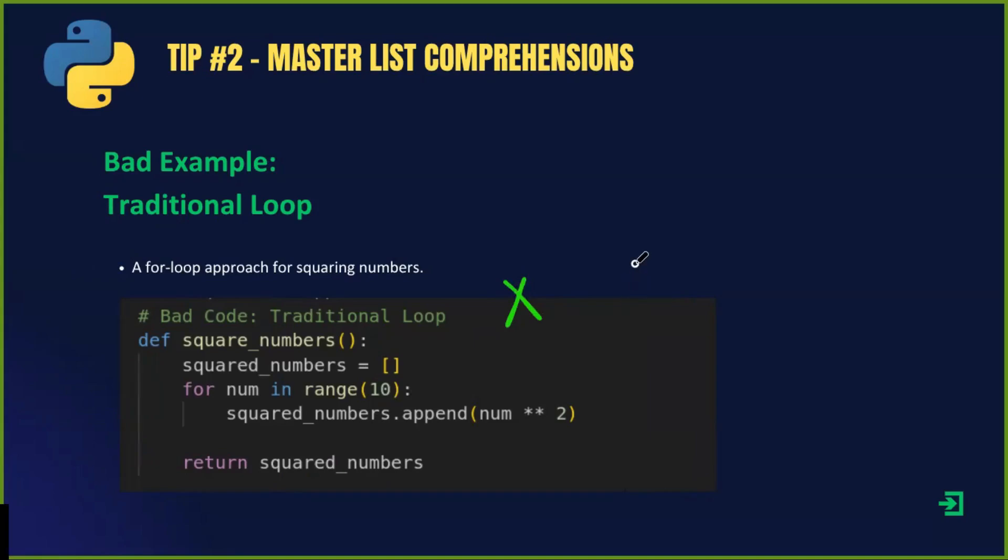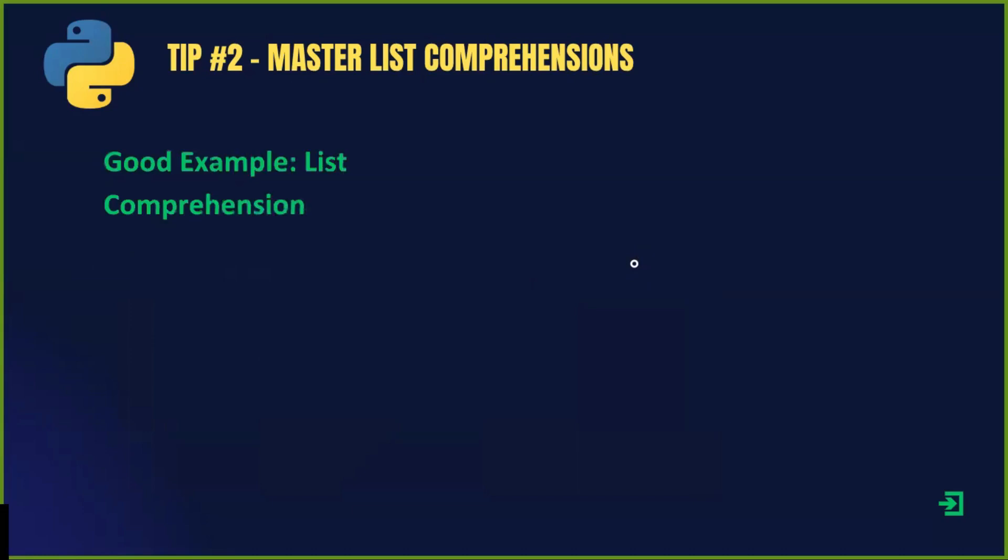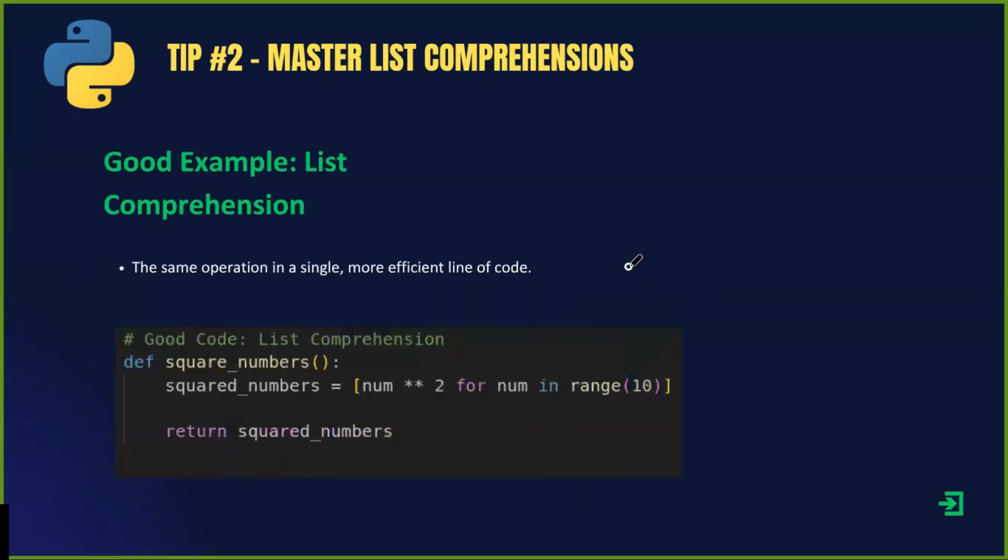There is a more efficient way using list comprehensions. Let's rewrite this using a list comprehension. Check this out. With list comprehensions, we can achieve the same result in just one line. It is much cleaner, easier to read and Pythonic.